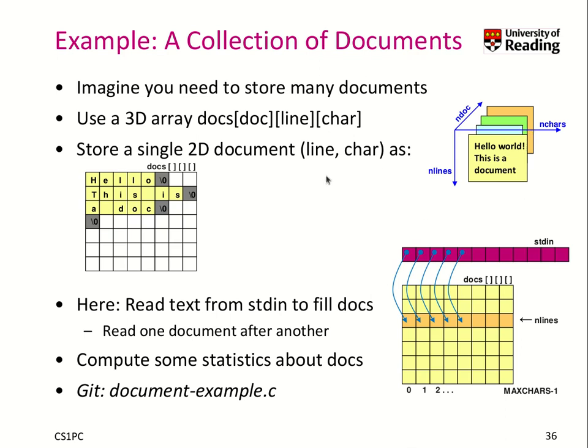So what you could do is store all the documents that you have in such a data structure. You have a document as first index, then you have the line representing the row, then you have the character in the column. So we have the 2D document, it looks like this: hello, this is a document. And you could end a line with backslash 0, for instance, to know that it ends or backslash n.